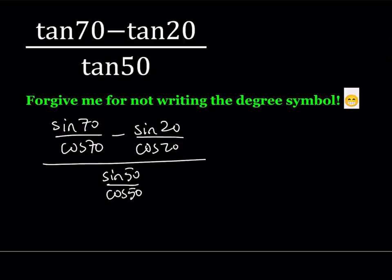Again, I'm not writing the degree symbol, but it's understood. So what can I do with this expression? Well, first of all, I can make a common denominator. Let's go ahead and make one. So to make a common denominator, I should multiply by cosine 20 here and cosine 70 here.